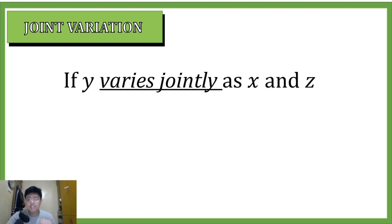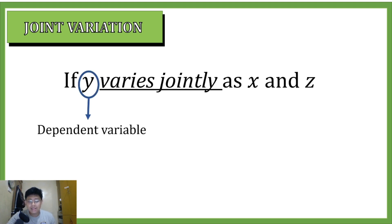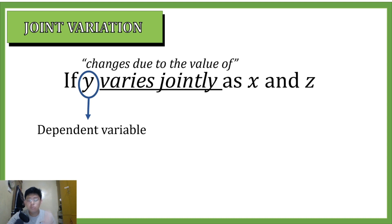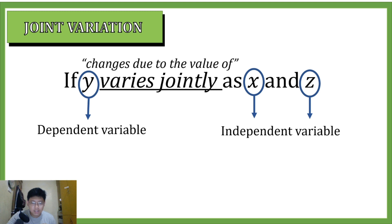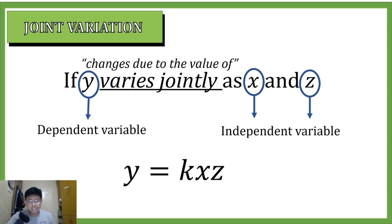For joint variation we will encounter three variables. The first variable — the one before the words 'varies jointly' — is our dependent variable. This dependent variable will change due to the values of the two independent variables. This phrase is translated to the equation y is equal to k times x times z. It is just like direct variation but with two independent variables.